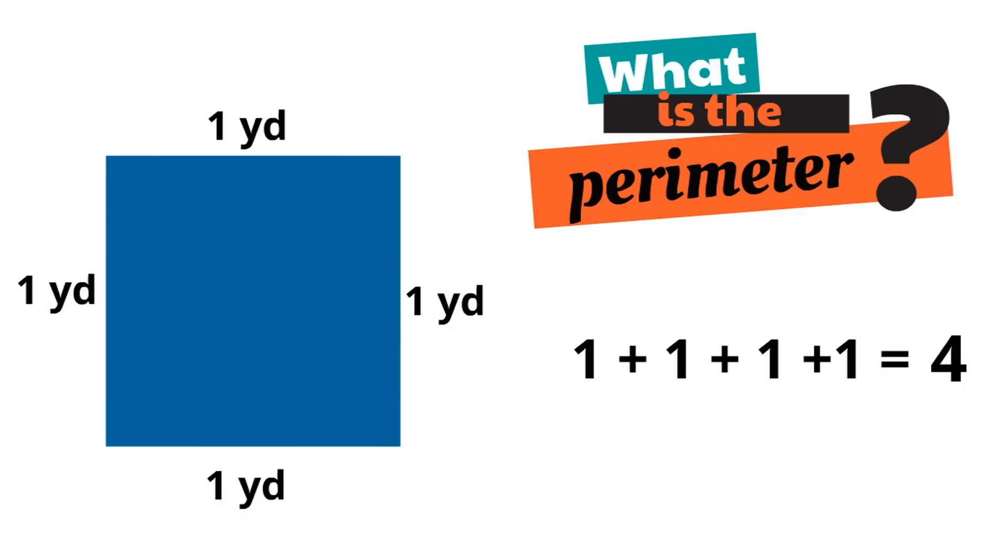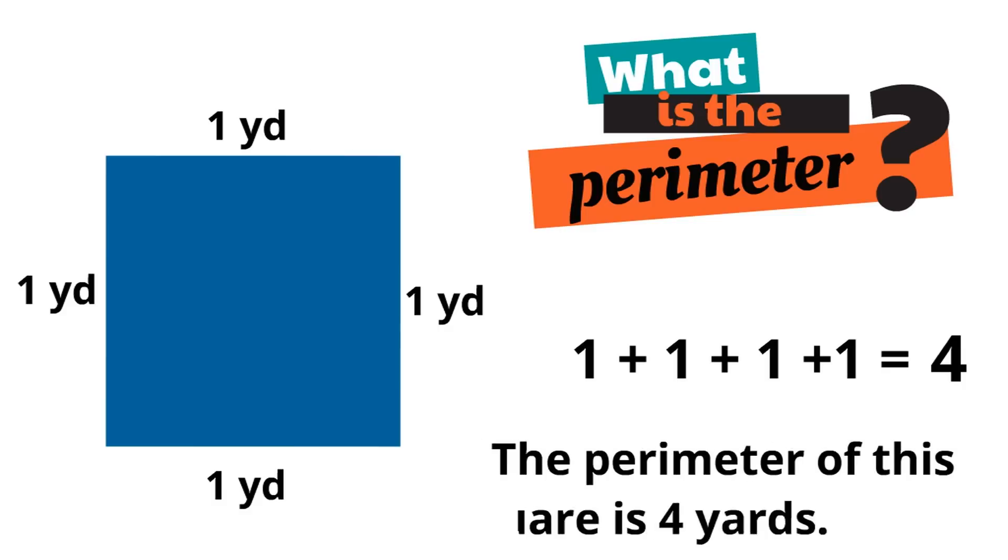The perimeter of this square is four yards. The perimeter, remember, is the distance around a shape. If you were to go around this entire square, it would be four yards.